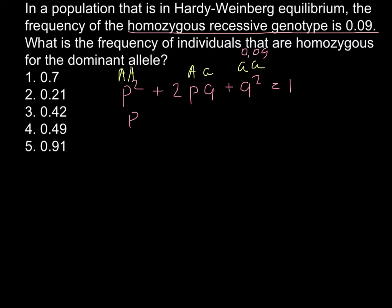One dominant, P, and recessive, Q. If we add all the alleles, this is going to equal to 1 in the population.